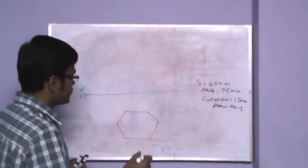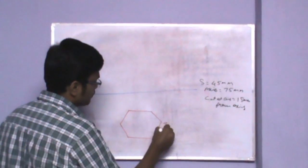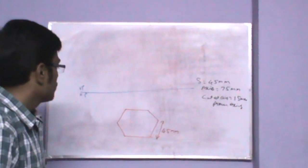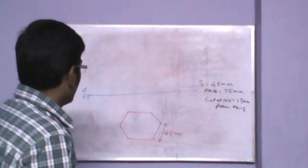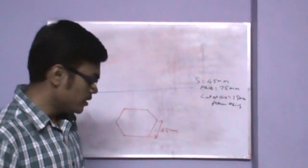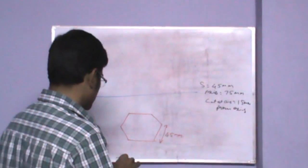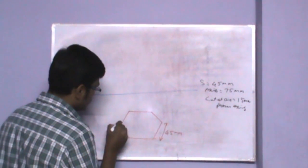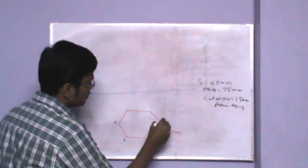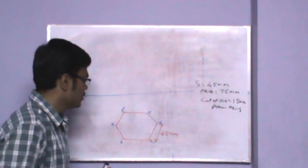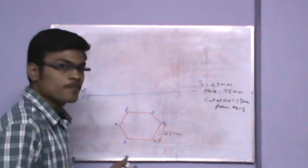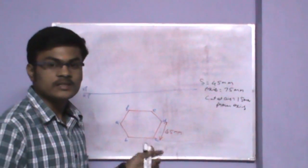I have drawn the prism of side 45mm. Each side is 45mm. Now I am going to draw its projection. Before drawing the projection, let me give some names for the sides. Let me mark the vertices: A, B, C, D, E, and F. We have 6 sides. As this is a solid hexagonal prism, we have to mark the back portion as well.